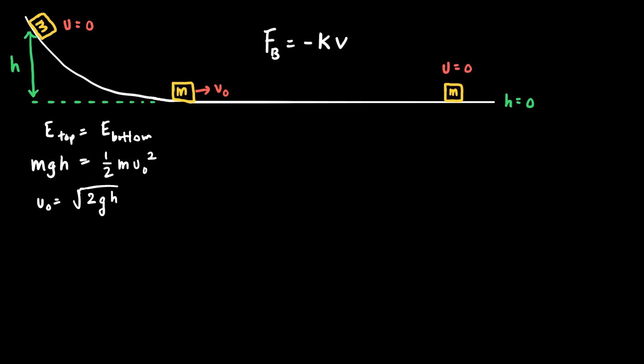If our goal is to write equations for the velocity and acceleration of this cart as a function of time, we need to relate the braking force to the initial velocity in an equation that also includes time. We do this using Newton's second law: the net force equals mass times acceleration. On the horizontal section, the only force in the direction of motion is the braking force, minus k times v, and on the right-hand side I can express the acceleration as dv/dt.